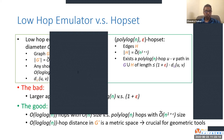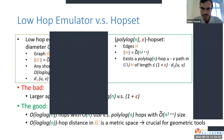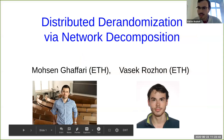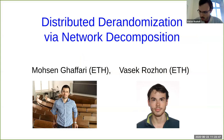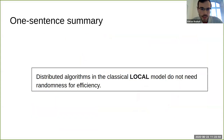The next talk is by Vasek and Mohsen on deterministic distributed algorithms — a very nice result with elegant technique. So hello, Vasek Grosany is speaking, and this is joint work with Mohsen Ghaffari. One sentence summary: we proved that distributed algorithms in the very classical LOCAL model of distributed computing do not need randomness for efficiency. In this model we study distributed graph algorithms. We start with a huge undirected graph on n nodes, each with one computer, communicating in synchronous rounds. In each round, any computer can send any message to any of its neighbors, with no bound on message size or computation.